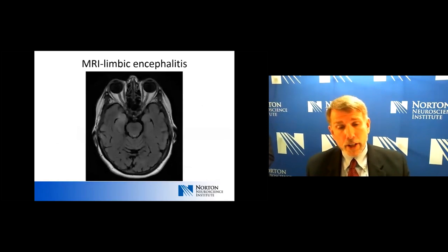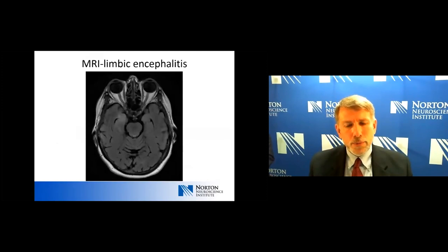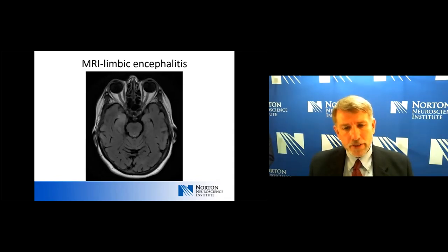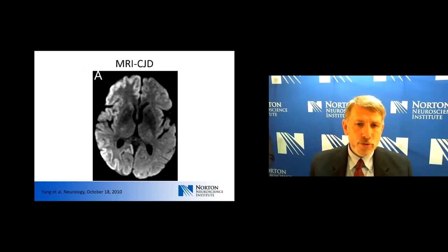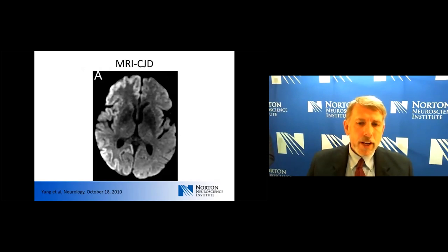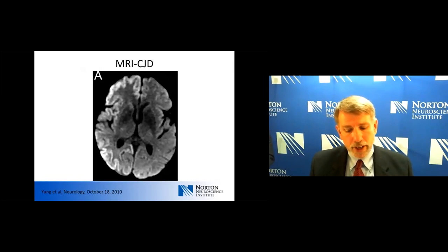On MRI, one finding to look for — though a bit subtle — is bright signal in the right anterior temporal lobe indicating limbic encephalitis, which may be infectious or autoimmune. On diffusion-weighted imaging, bright signal around the cortex frontally, the insula, and posteriorly — particularly on the right — is a very strong indication of underlying CJD or prion disease.